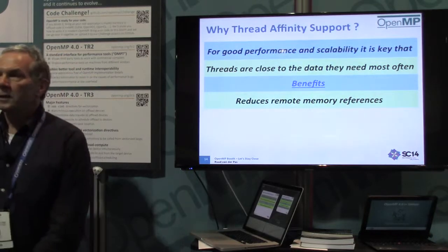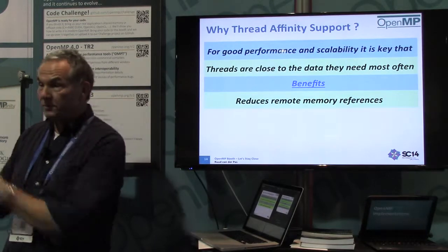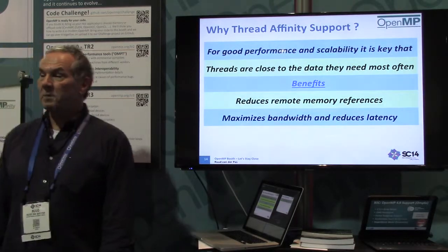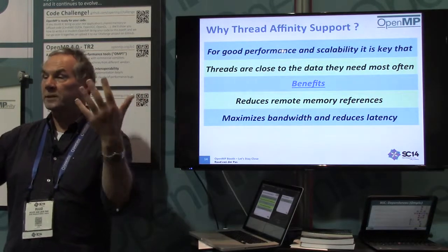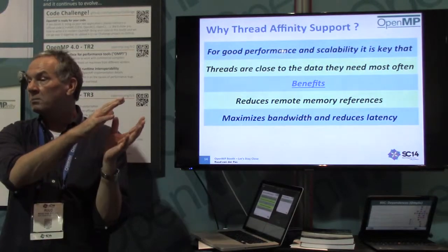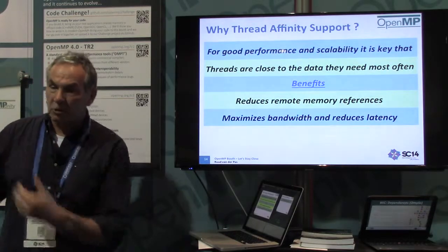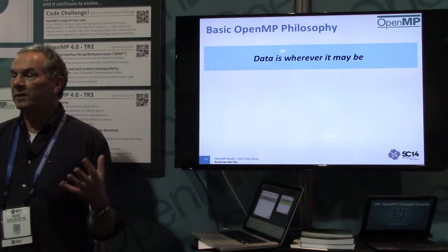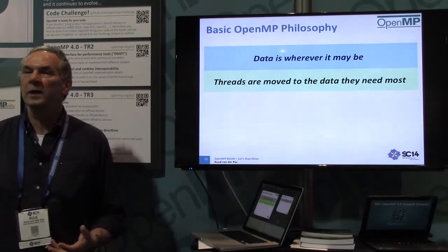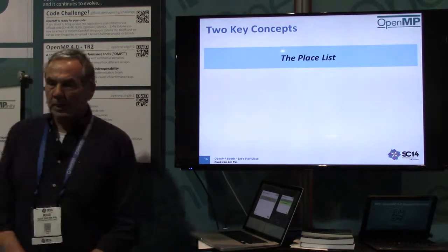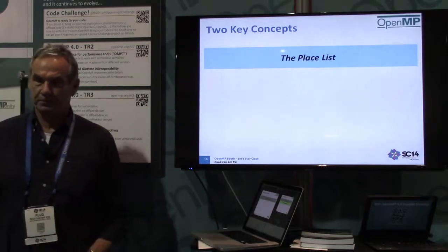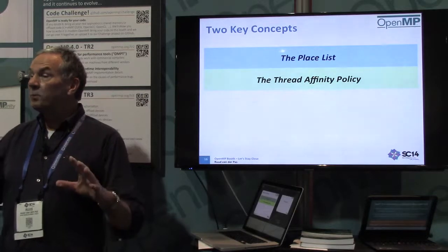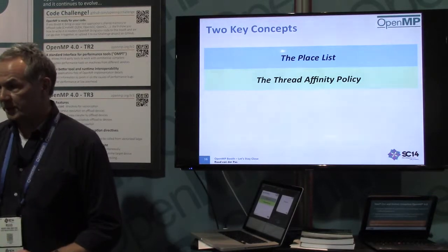The big benefit is you no longer have all these remote references to your data elsewhere, and especially on larger machines with more than two sockets, that really starts to play a role. You maximize the bandwidth because now threads are all reading from their local memories in parallel, instead of maxing out the bandwidth of one socket. You reduce the latency because you're closer to your data. Those are the two main benefits. And that brings me to the two key concepts in affinity control: the place list, and the affinity policy.